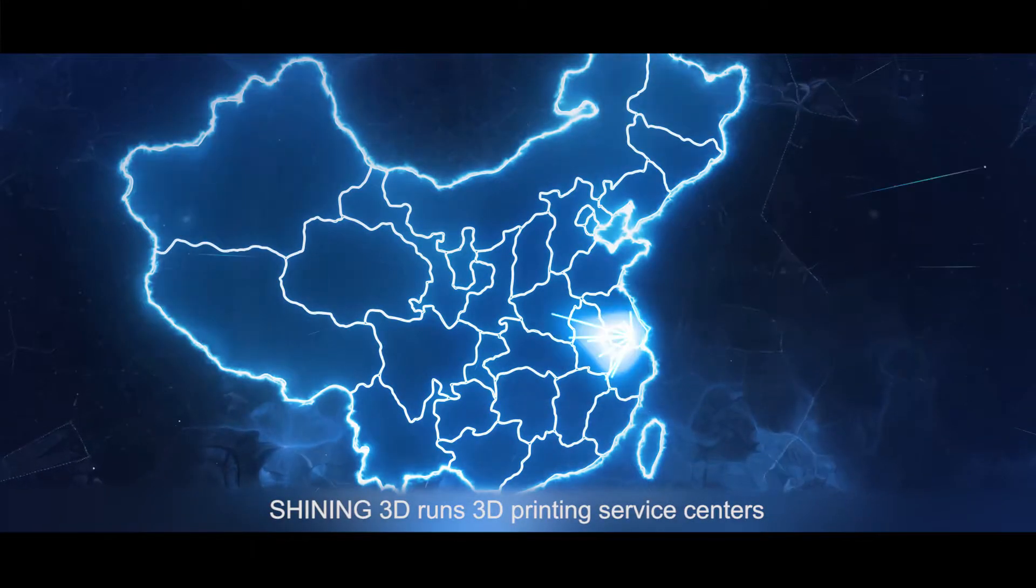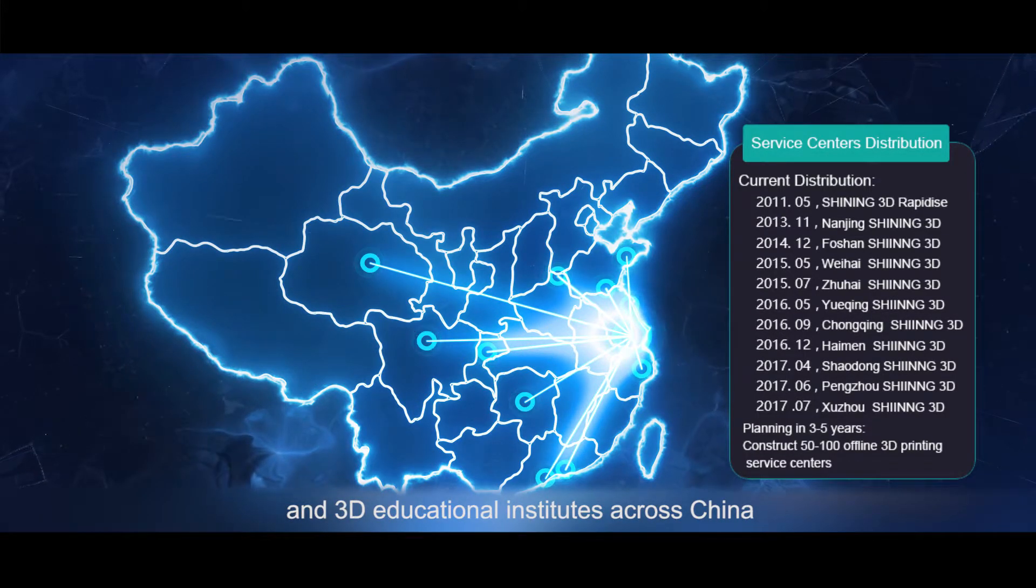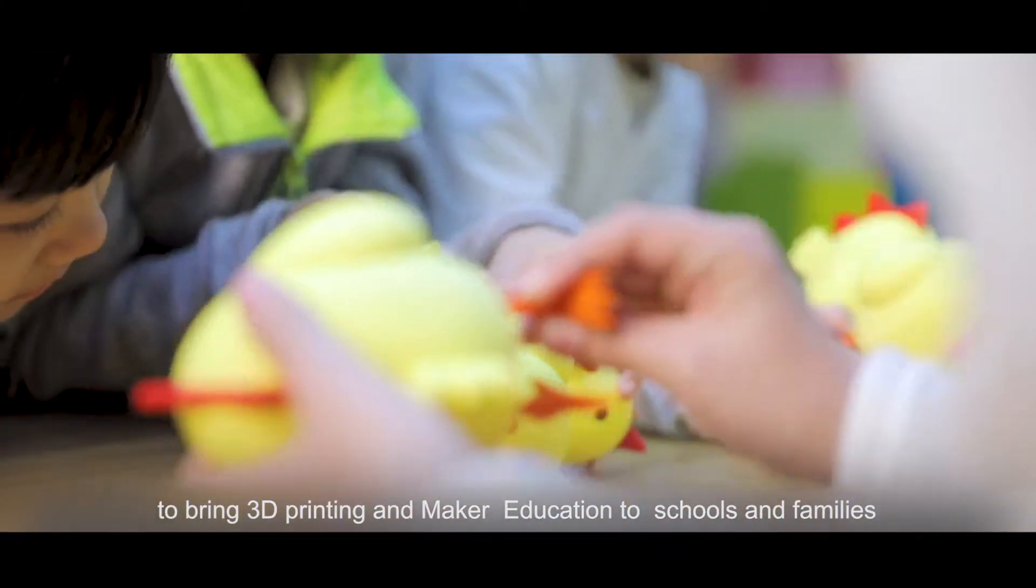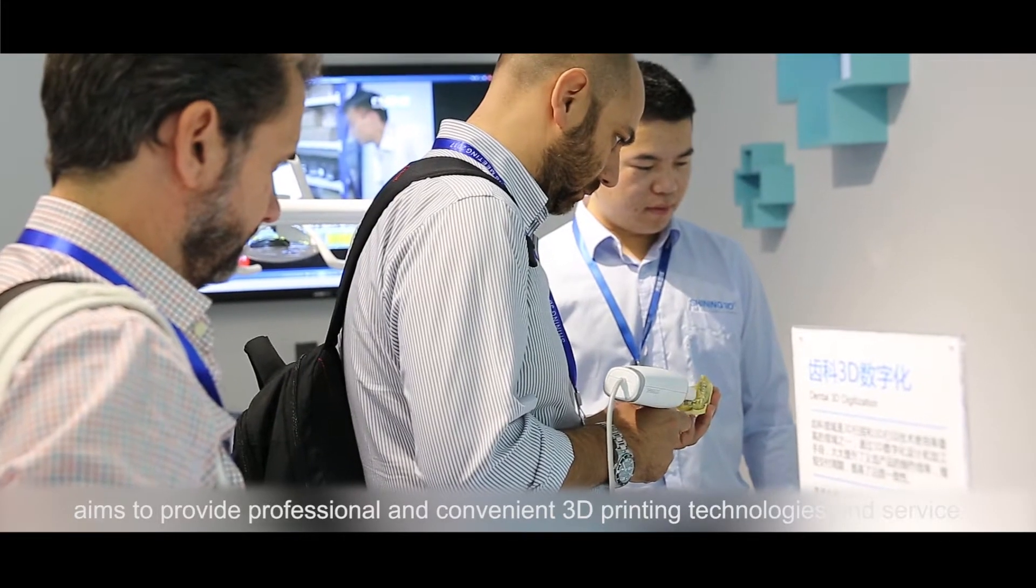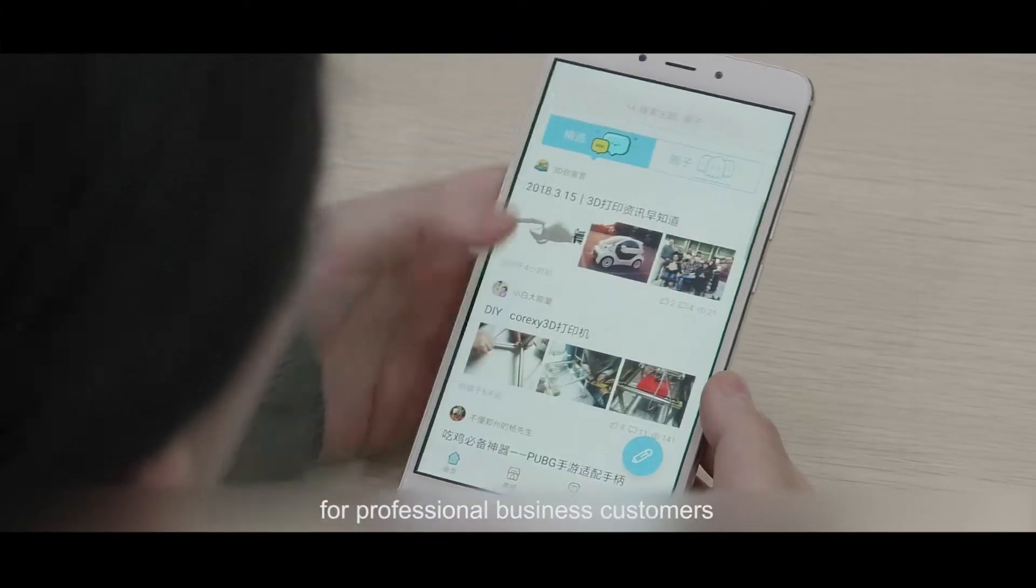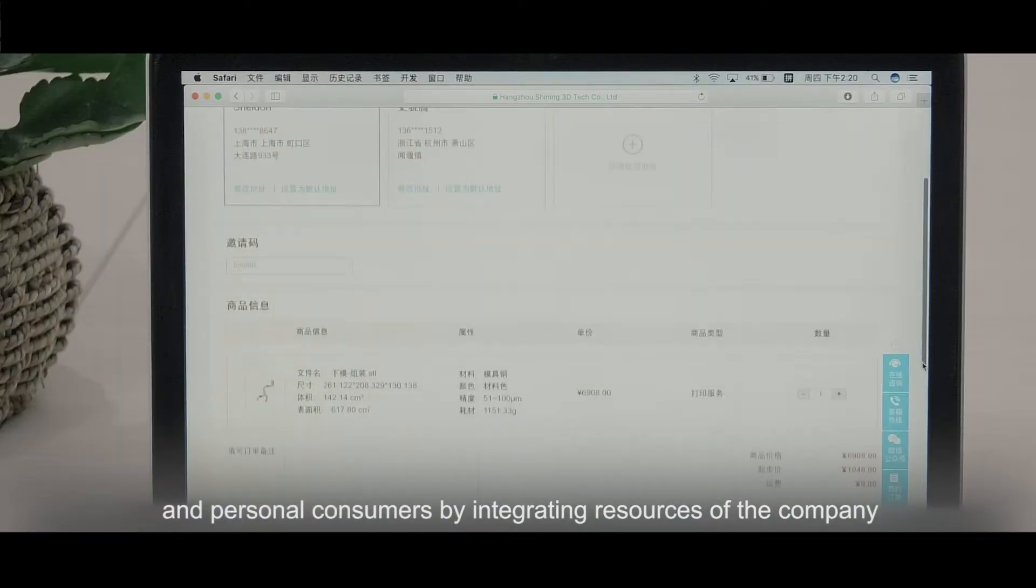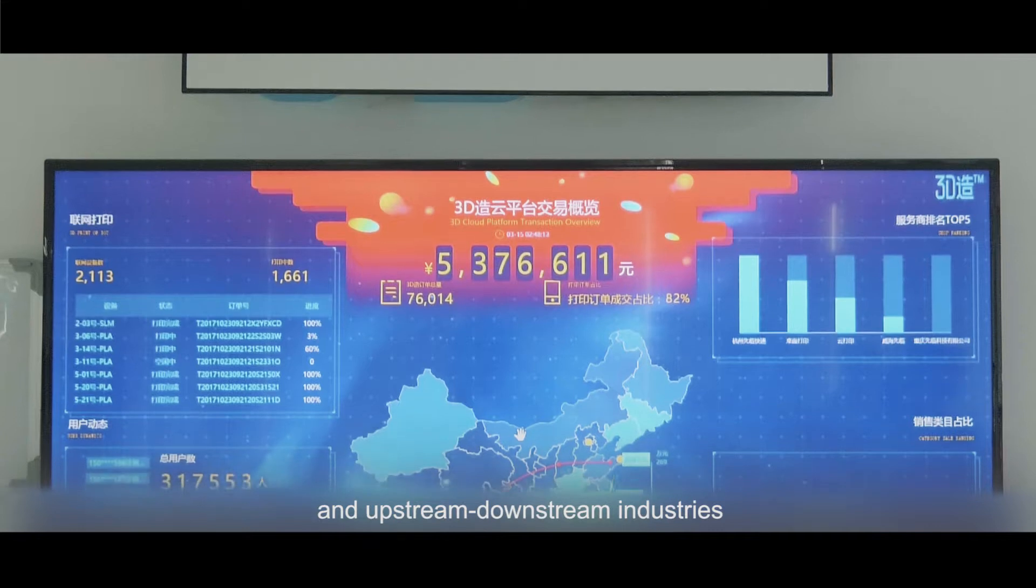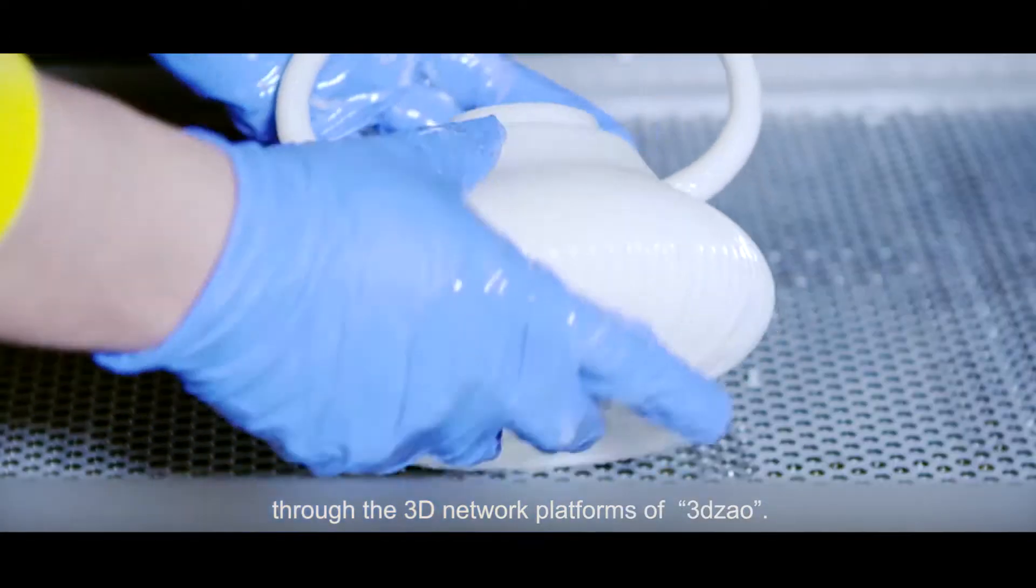Shiny 3D is constructing 3D printing service centers and 3D educational institutes across China. To bring 3D printing and maker education into schools and families, they aim to provide professional and convenient 3D printing technologies and service for professional business customers and personal consumers through integrating resources of the company and upstream-downstream industries by means of the 3D network platform 3D ZOW.